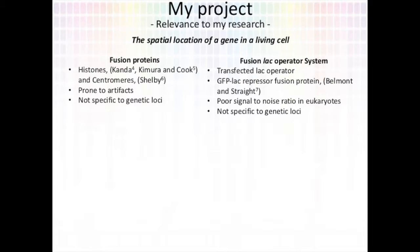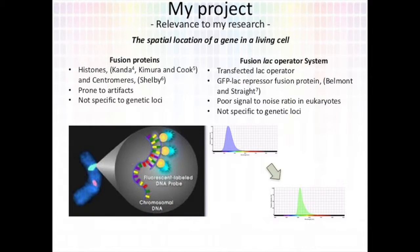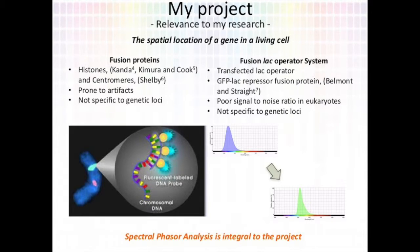Another problem is that the LAC operator method is not specific to a genetic loci — it relies on the LAC operator being transfected into the organism, so it doesn't really help us find the location of genes specific to that organism. My research project aims to use spectral phasor analysis to determine if the spectral profile of a fluorescent probe changes under hybridization to a target gene. If spectral phasor analysis can identify spectral differences in different genomic DNA microenvironments — such as hybridization or Hoogsteen pairing, self-annealing, or hydrogen bonding — then we may be able to use differences in these spectral profiles to determine where these different microenvironments are. So when a labeled probe is hybridized to a gene it may exhibit a different spectral profile from when it's not hybridized. Spectral phasor analysis is therefore integral to my project, and that's what I tested this semester.